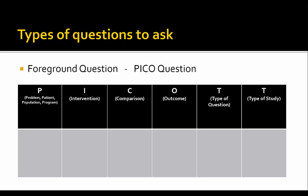As you can see, the various letters of PICO stand for various pieces of your question. One thing people sometimes get confused by is the difference between the Intervention and the Comparison. The Intervention is what you want to do — the new treatment you want to try. The Comparison, or C, is what you are doing now. So if you're currently doing something to treat pressure ulcers and it's not working, that's what you compare your new intervention to. The C is what you're doing now, and the I is what you want to do.